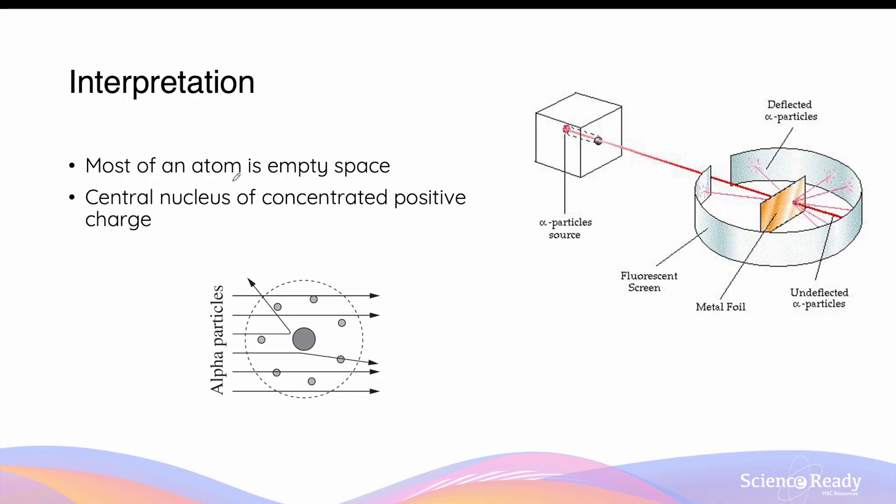Geiger and Marsden's experiment observation supports a different model of the atom. In this model of the atom, most of the atom is empty space, but it is characterized by the presence of a central nucleus or region of concentrated positive charge. In this model, when the alpha particle collides with this highly concentrated positive region, known as the nucleus, a large deflection will be observed.